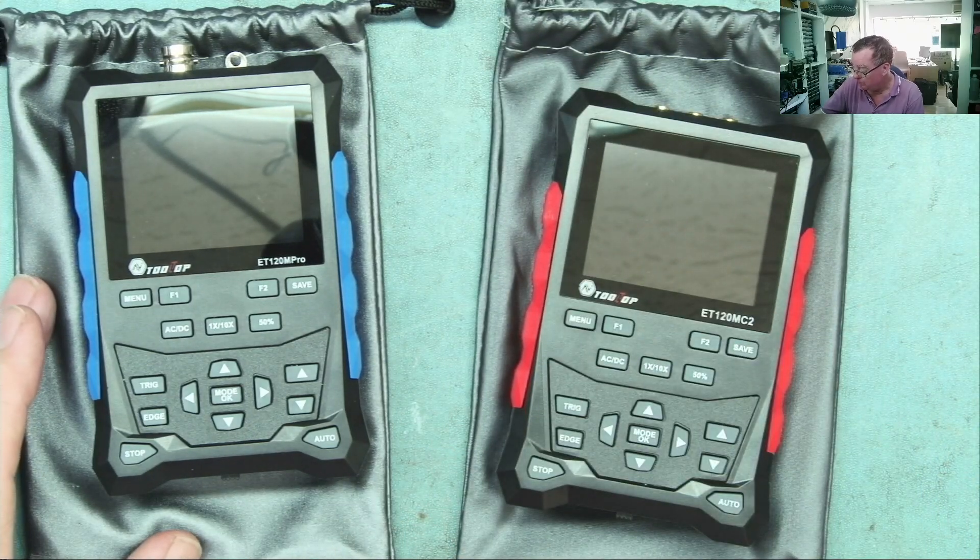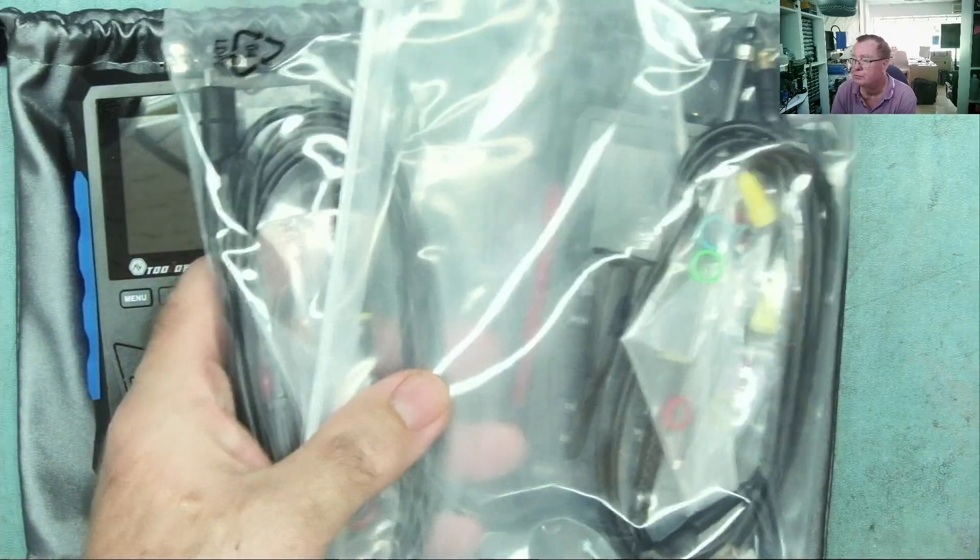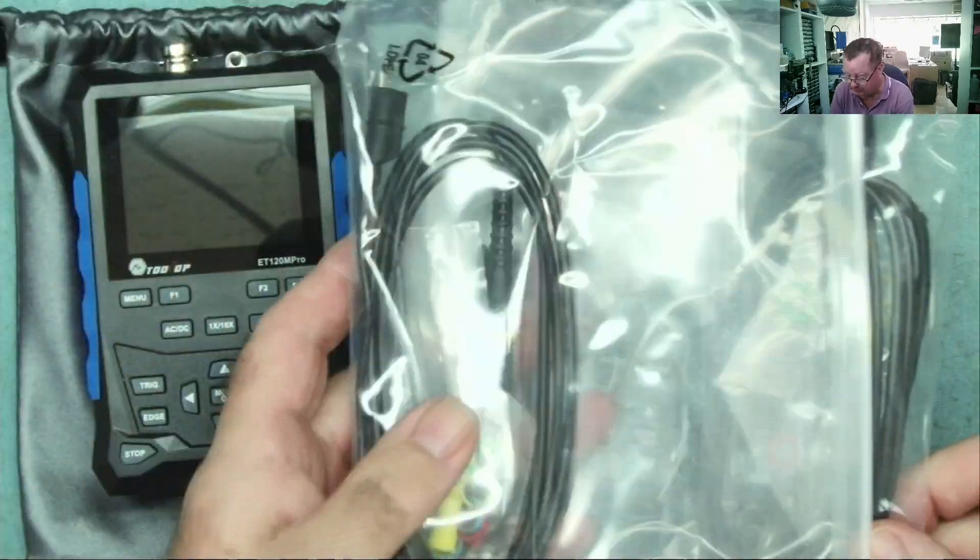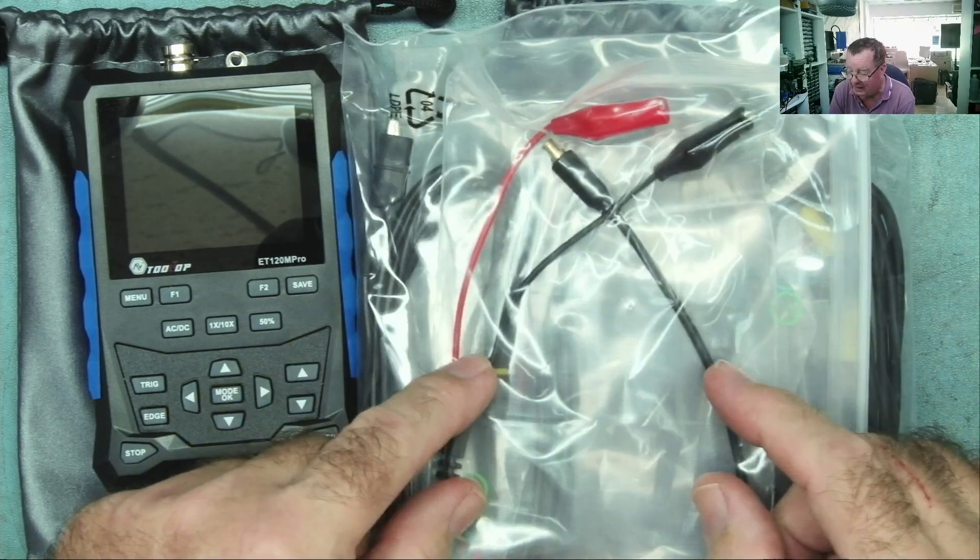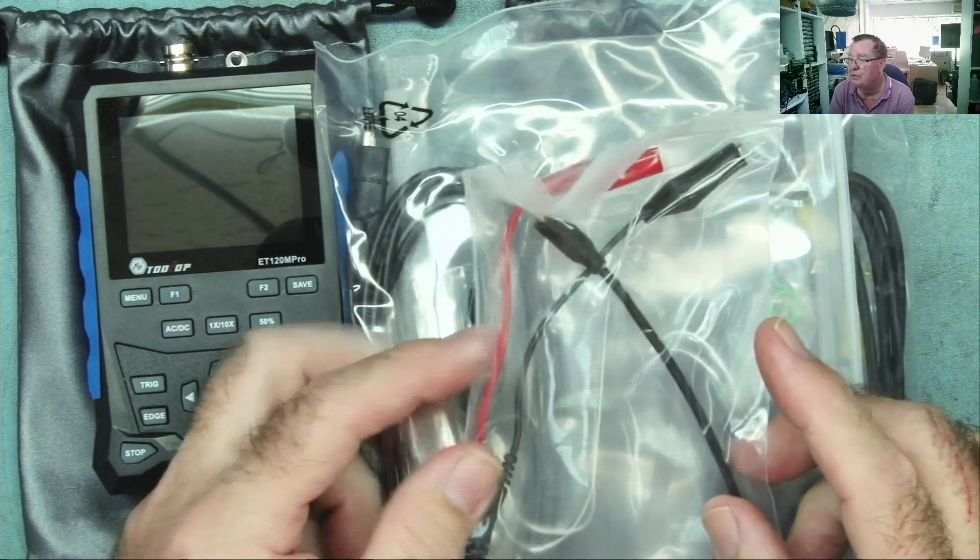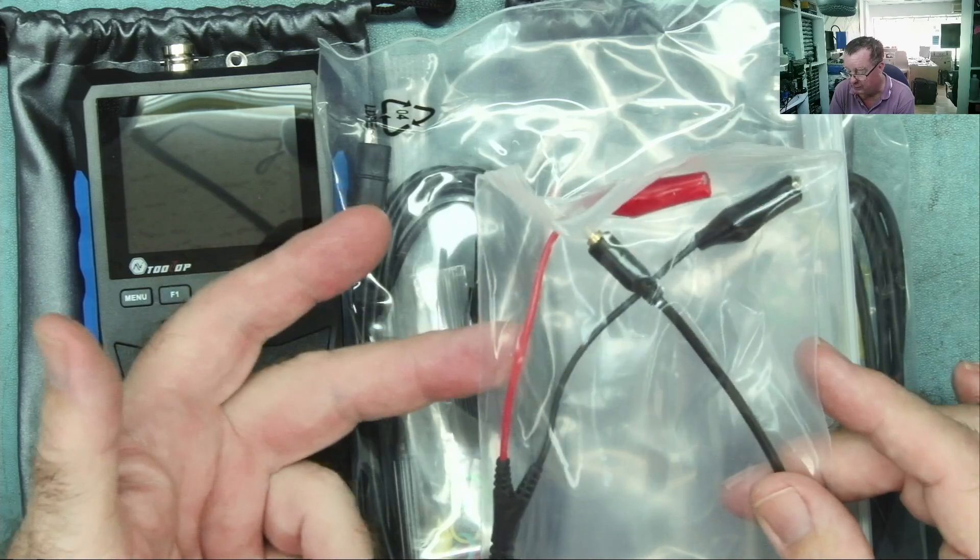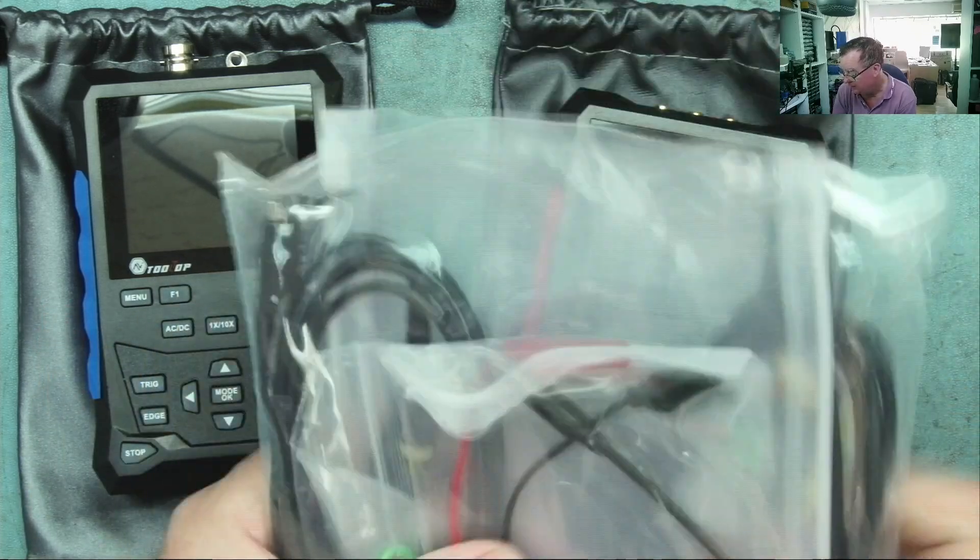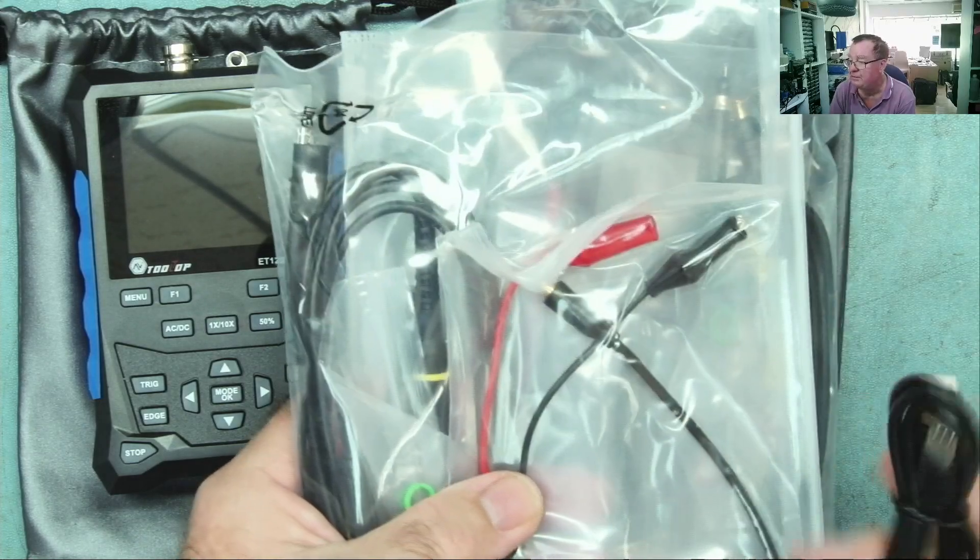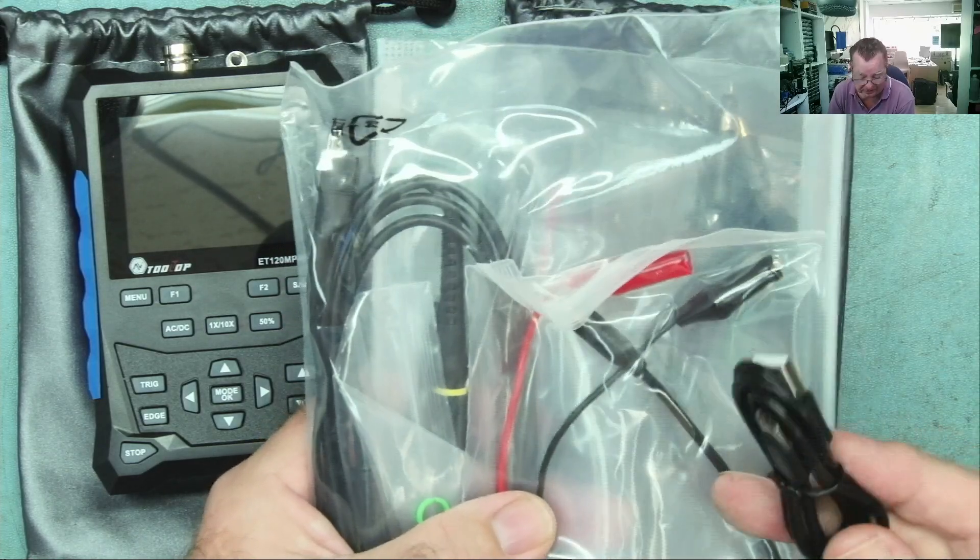It comes with a nice little carry case. Obviously these are meant to be portable devices. The dual channel one comes with two scope probes, look fairly standard to me apart from one thing which we'll talk about in a moment. It also comes with a lead you can use as a probe or on the function generator.